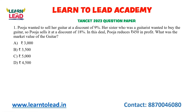I have taken the third section. Priya wanted to sell her guitar at a discount of 9%. Her sister, who was a guitarist, wanted to buy the guitar, so Pooja sells it at a discount of 18%. In this deal, Pooja reduces 450 in profit. What was the market value of the guitar? You should know the basic concepts — basic concepts will be easy.